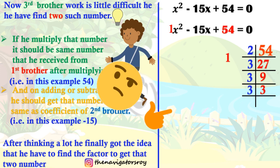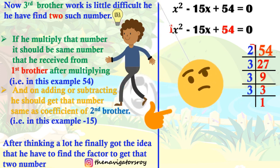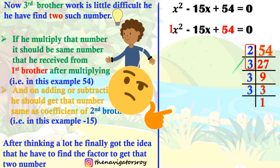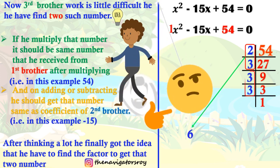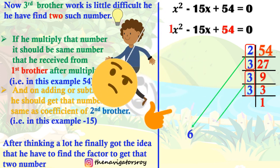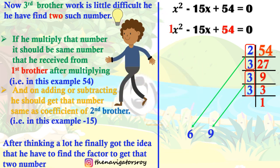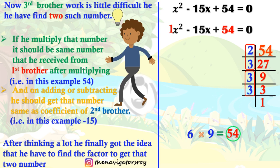Now we have done the factorization. We have two numbers. If we add them, we should get 15. We can see that 2 times 3 is 6 and 3 times 3 is 9. Obviously, 6 times 9 is 54. And 6 plus 9 gives us 15. I will highlight it — 6 plus 9 equals 15. So the third brother is very happy because he has finally found his two numbers: 6 and 9.